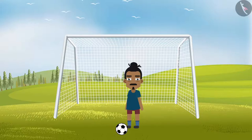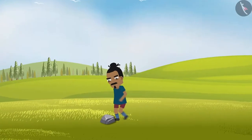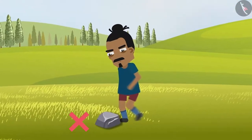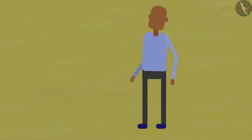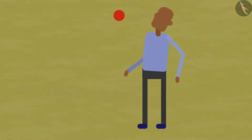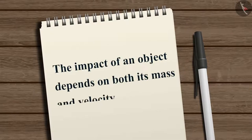Let us understand this with some examples. In a football match, when the footballer kicks a ball, the ball moves but the player does not get hurt. However, if the player were to kick a rock, the player's leg would get seriously injured. Even when a small object like a cricket ball is thrown with a high velocity, it can hurt a person. These examples suggest that the impact of an object depends on both its mass and velocity.